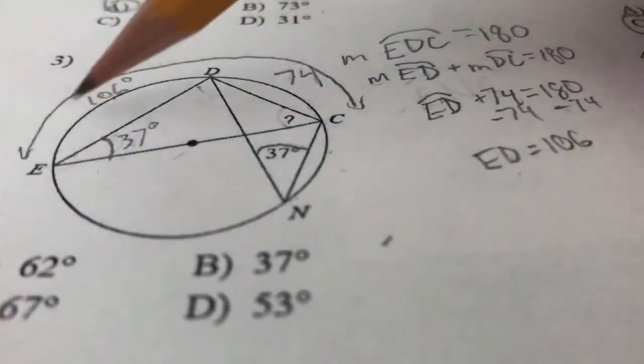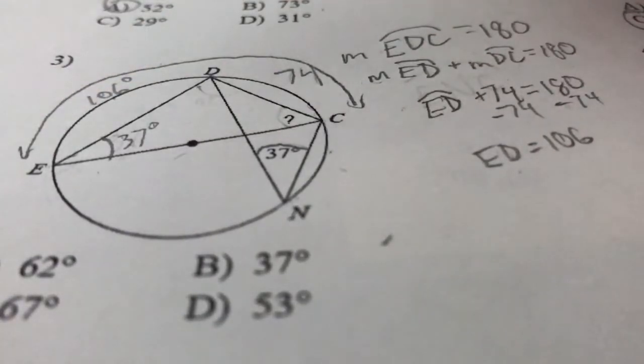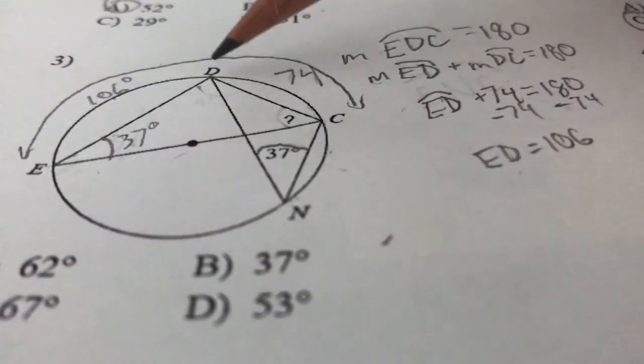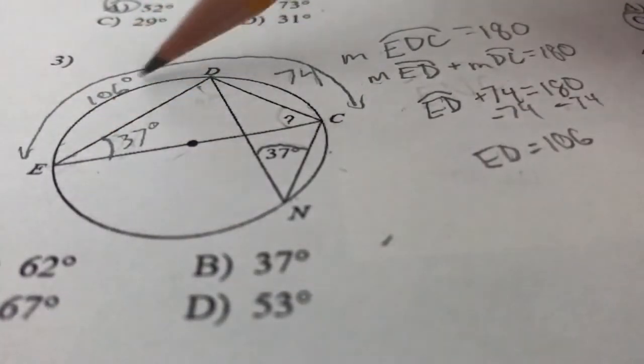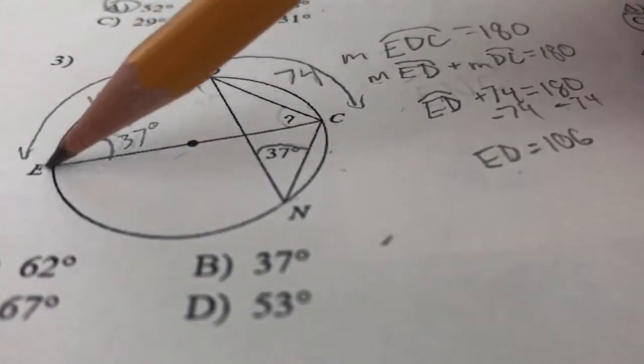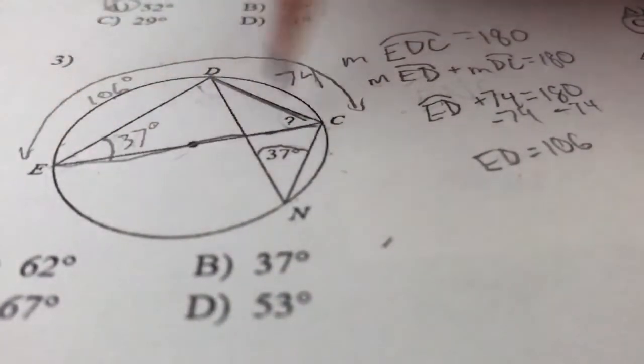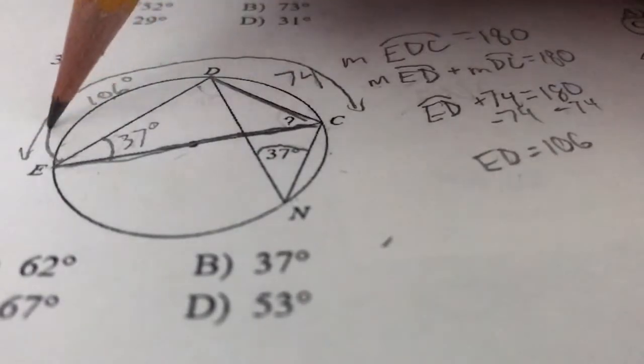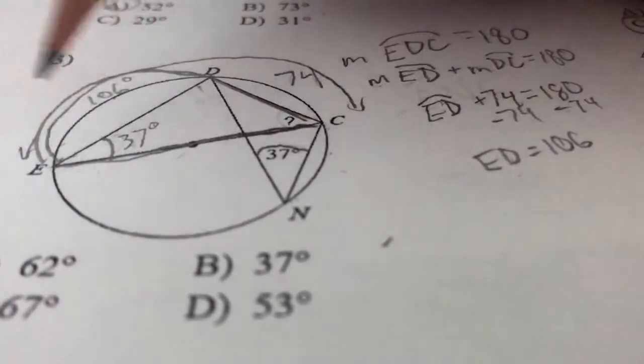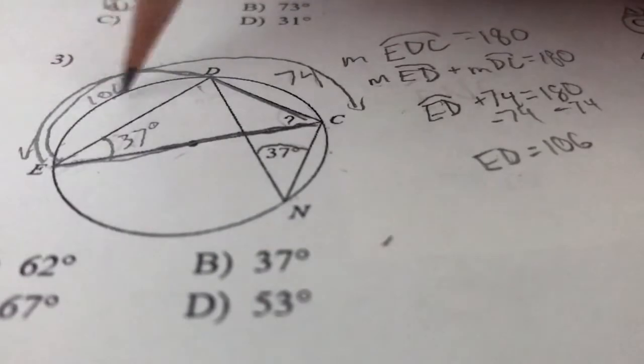If that right there is 106, then what other angles could I know? If I know that that's 106, my intercepted arc is ED. So my angle is actually going to be the one we're solving for right here. So right there, if that's 106, we could divide that by 2 to get there.